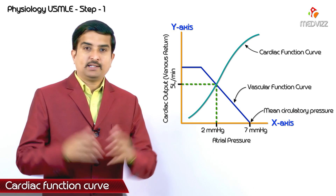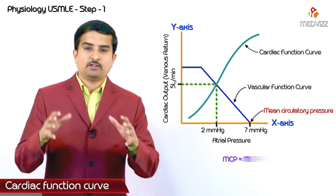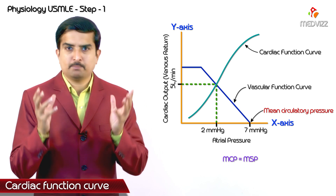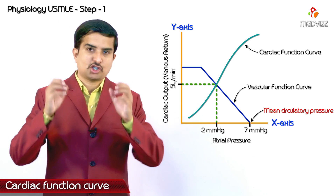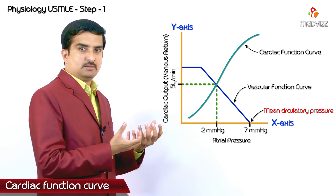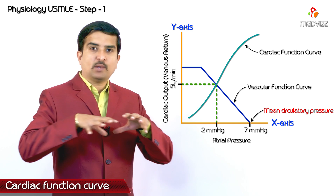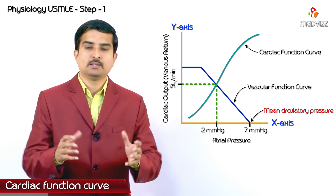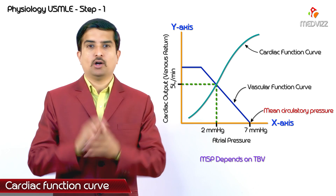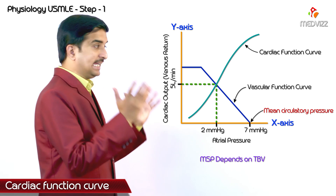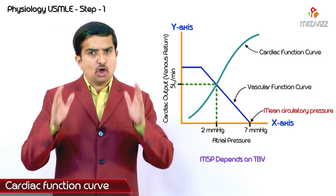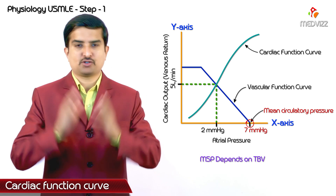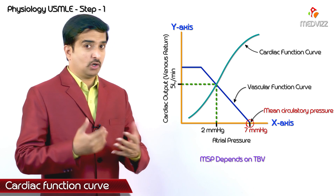From this graph, mean circulatory pressure equals mean systemic pressure. Mean systemic pressure is the equilibrium pressure in the cardiovascular system with the heart stopped — whenever the heart stops beating, pressure equalizes in the vascular system. This equilibrium pressure in the vascular channels is called mean systemic pressure. It mainly depends on the total blood volume present inside the vascular circuit, and the normal value is about 7 mmHg.